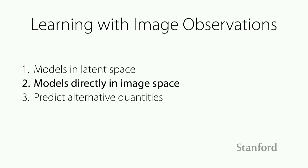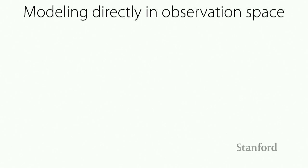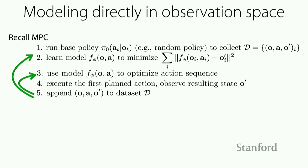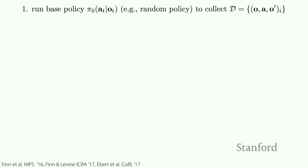Now let's talk about modeling things directly in observation space. This is the same MPC algorithm shown before, but where all states are replaced with observations O. We can learn a model on our observations and plan with that model — starting by running some policy to collect data.